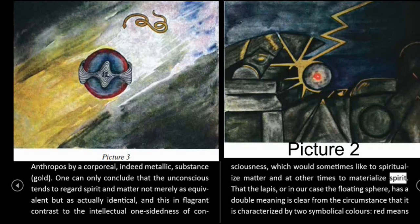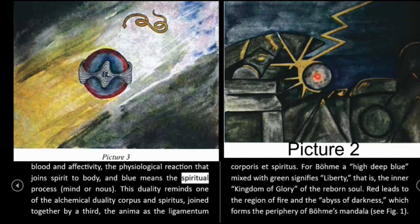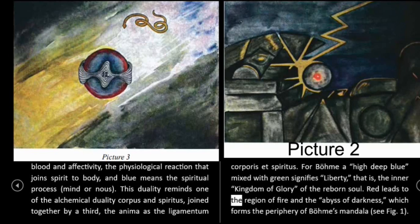The duplicity of Mercurius — his simultaneously metallic and pneumatic nature — is a parallel to the symbolization of an extremely spiritual idea like the anthropos by a corporeal, indeed metallic, substance: gold. One can only conclude that the unconscious tends to regard spirit and matter not merely as equivalent but as actually identical, and this in flagrant contrast to the intellectual one-sidedness of consciousness, which would sometimes like to spiritualize matter and at other times to materialize spirit. That the lapis, or in our case the floating sphere, has a double meaning is clear from the circumstance that it is characterized by two symbolical colors: red means blood and effectivity — the physiological reaction that joins spirit to body — and blue means the spiritual process, mind or nous. This duality reminds one of the alchemical duality of corpus and spiritus, joined together by a third, the anima as the ligamentum corporis et spiritus. For Böhm, a high deep blue mixed with green signifies liberty — that is, the inner kingdom of glory of the reborn soul. Red leads to the region of fire and the abyss of darkness, which forms the periphery of Böhm's mandala.